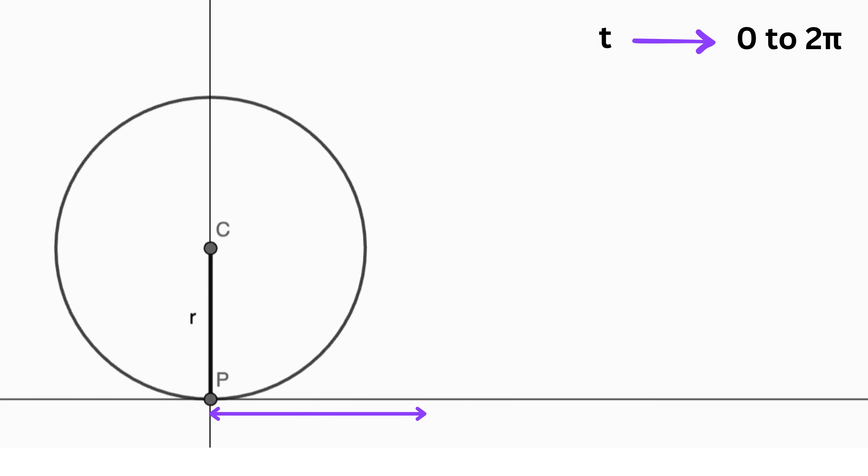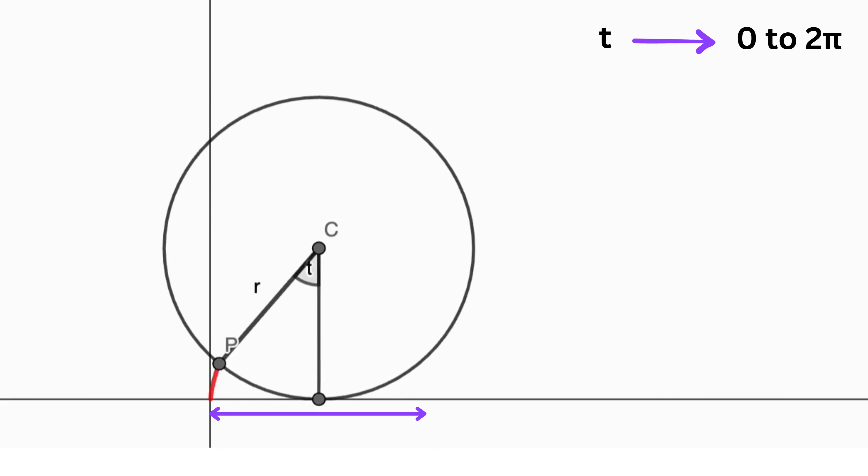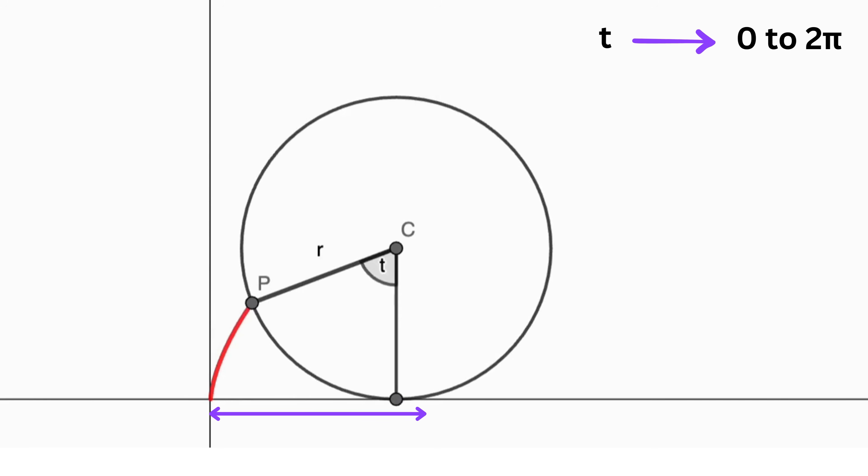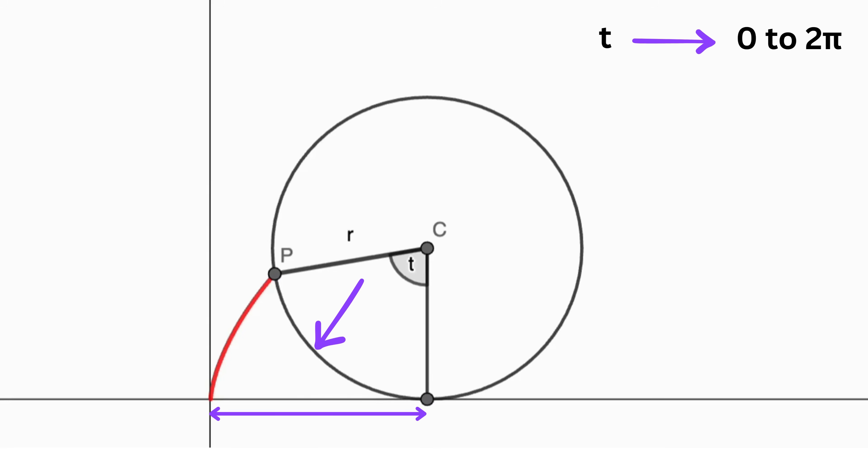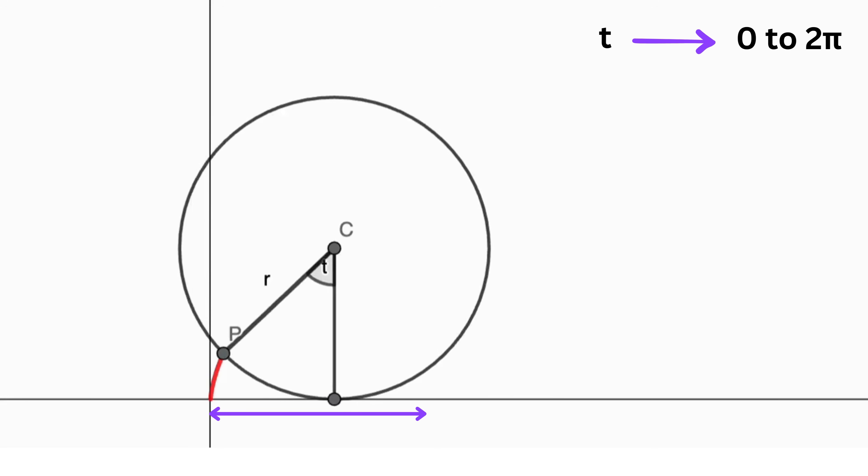Because there is no slipping, the horizontal distance the circle travels along the ground must be exactly equal to the length of the circumference arc that has been unwound or laid out onto the ground, or this one. Look at it again.